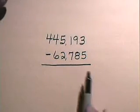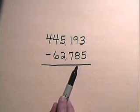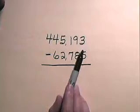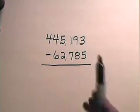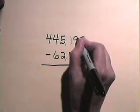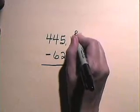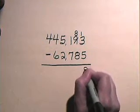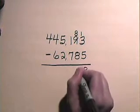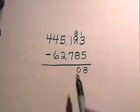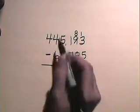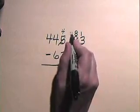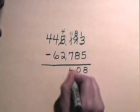Now let's subtract 62,785 from 445,193. In order to subtract 5 from 3, we have to borrow 1. This becomes 8 and this becomes 13. 13 subtract 5 is 8. 8 subtract 8 is 0. We cannot subtract 7 from 1, so we borrow. And this becomes 4. This number becomes 11.